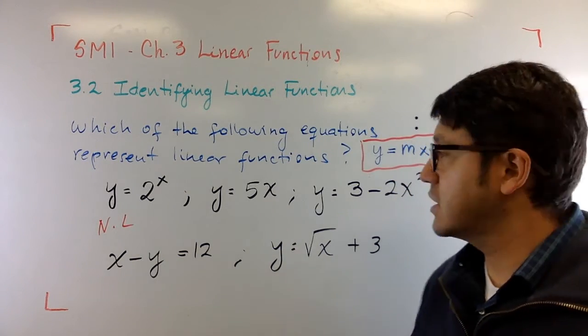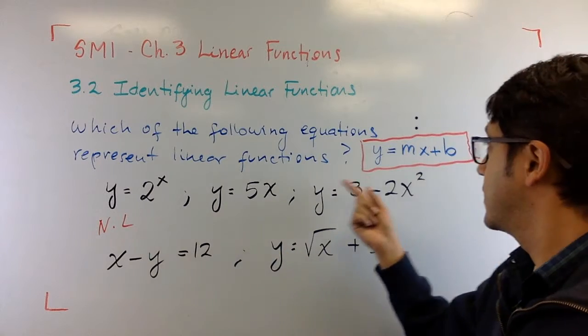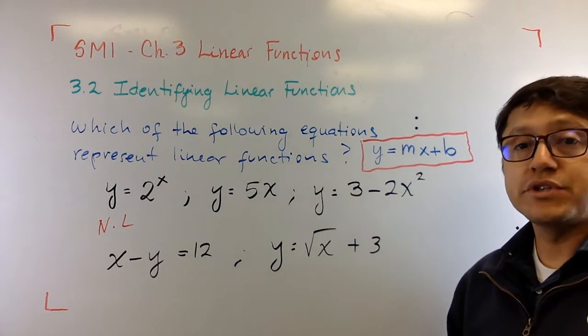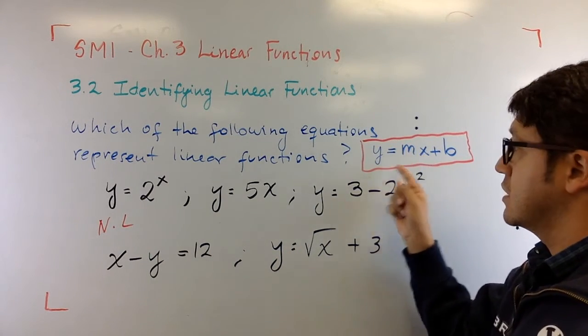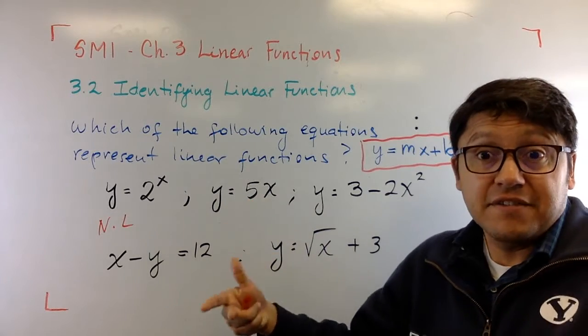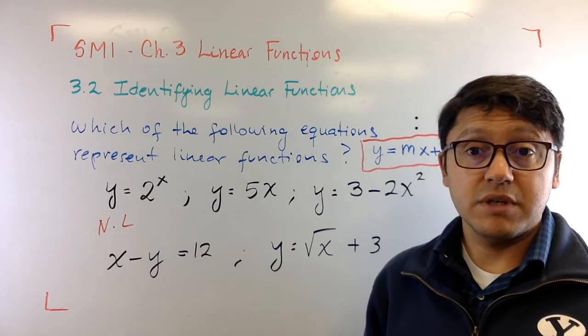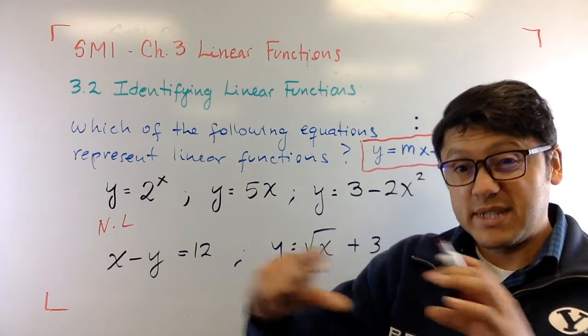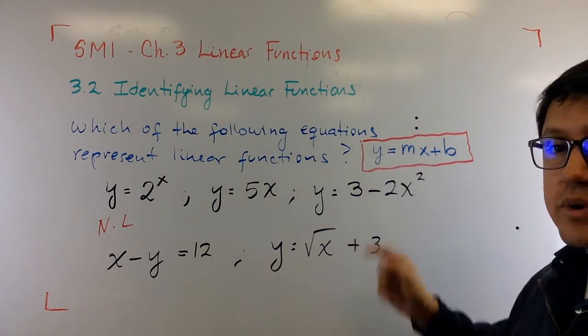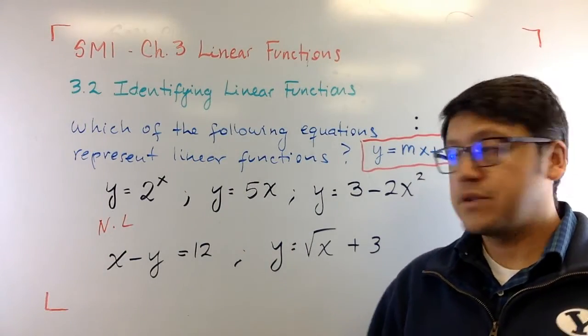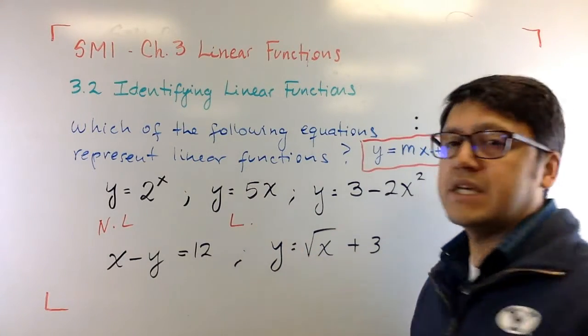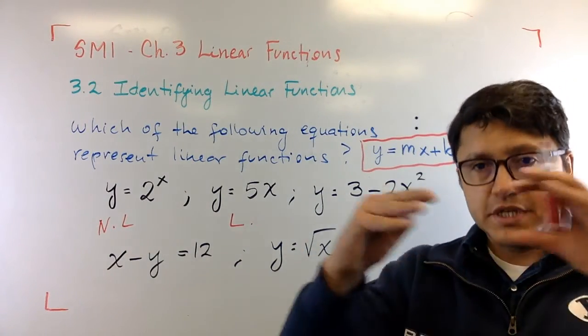Now, y equals 5x. If you take a look at this, you have 5x and compare it to the one we are using as the reference. We have mx, which in this case m is 5, right? And you say, where's b? In this case you can say that b is zero because 5x plus zero now resembles the pattern we have for linear functions. So this equation is a linear function because of its form.